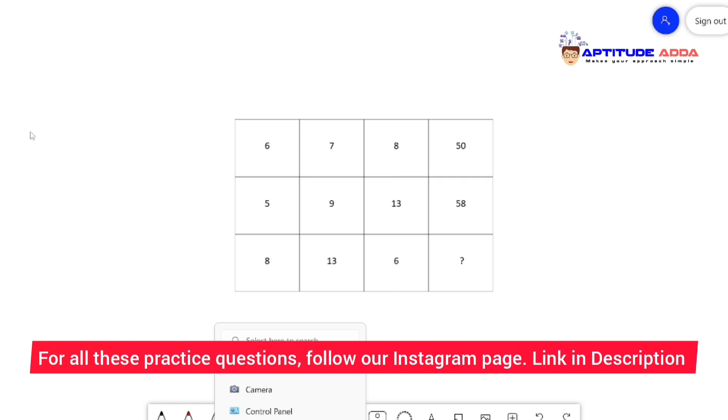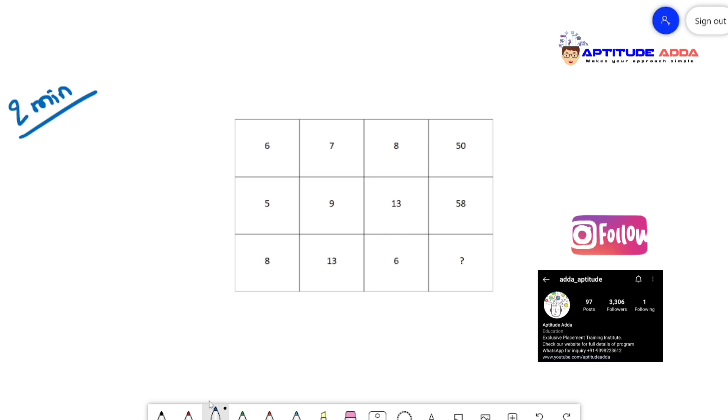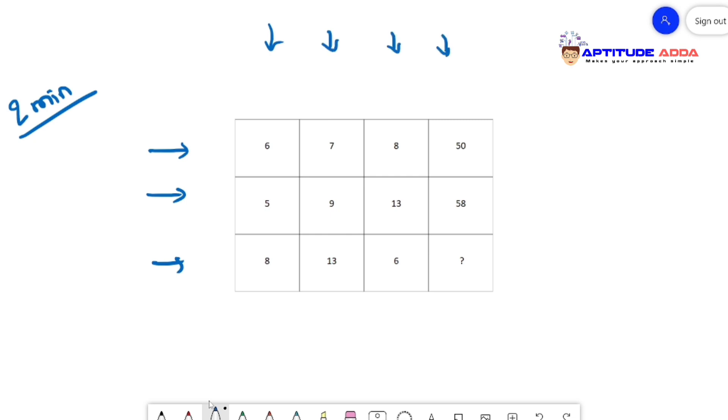I'm going to explain total eight questions in this video. The first one is a two marks question with three rows and four columns. If you observe the first three columns have very small numbers, whereas the last column has larger numbers like 50, 58. So we can interpret the last column is resultant of first three columns.